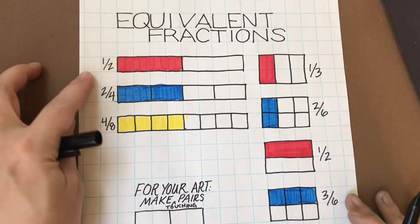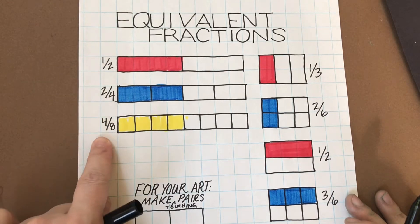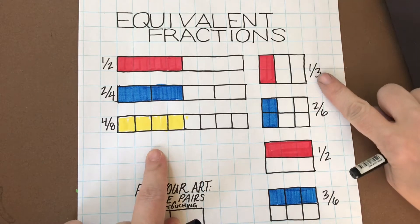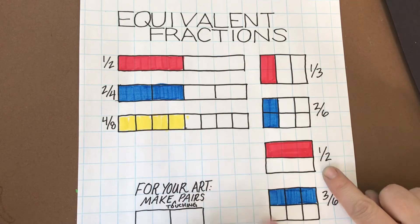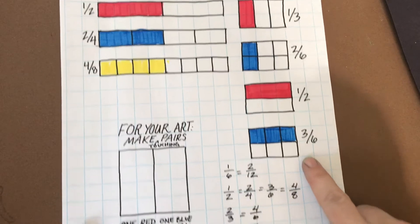Equivalent fractions are fractions that are the same amount when compared to one another. Here one half, two quarters, and four eighths are the same. Here, I'm comparing one third and it looks the same as two sixths. One half is the same as three sixths.